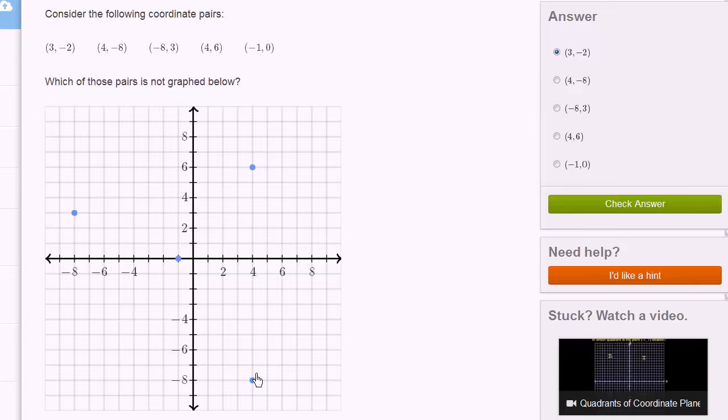4, negative 8 is right there. Negative 8, 3 is right over here. 4, 6 is right there. And negative 1, 0 is right there.